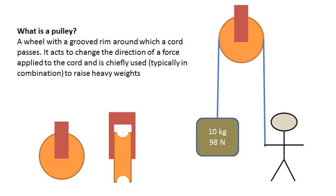A pulley is a wheel with a grooved rim around which a cord passes. It acts to change the direction of a force applied to the cord and is chiefly used, typically in combination, to raise heavy weights.